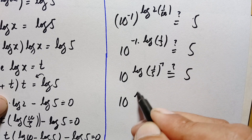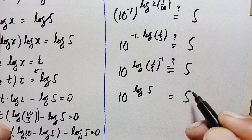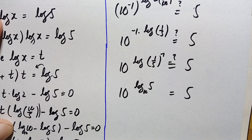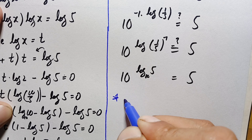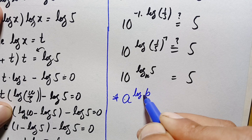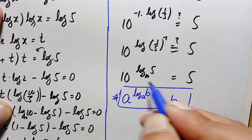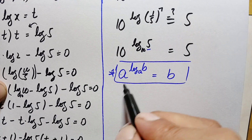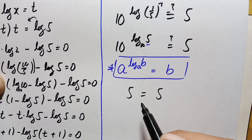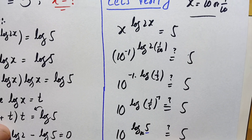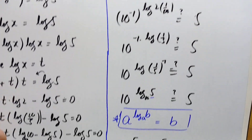(1/5)^(−1) is simply 5, so this becomes 10 raised to power log(5). Using the identity a^(log_a b) = b, this equals 5. Both sides equal 5, confirming that x = 1/10 is an exact and correct solution.